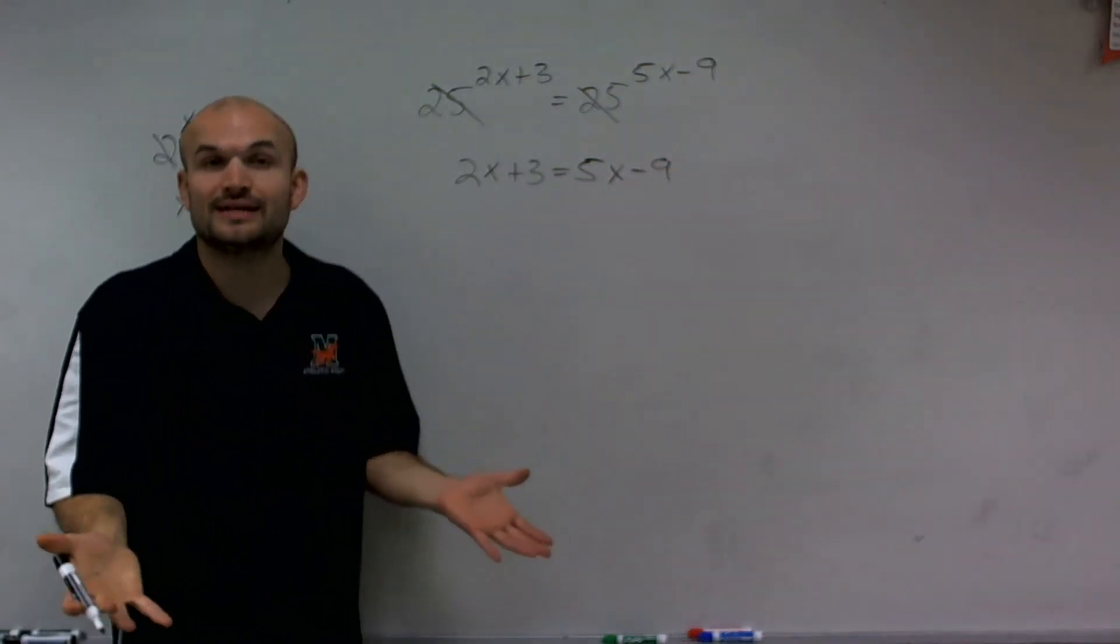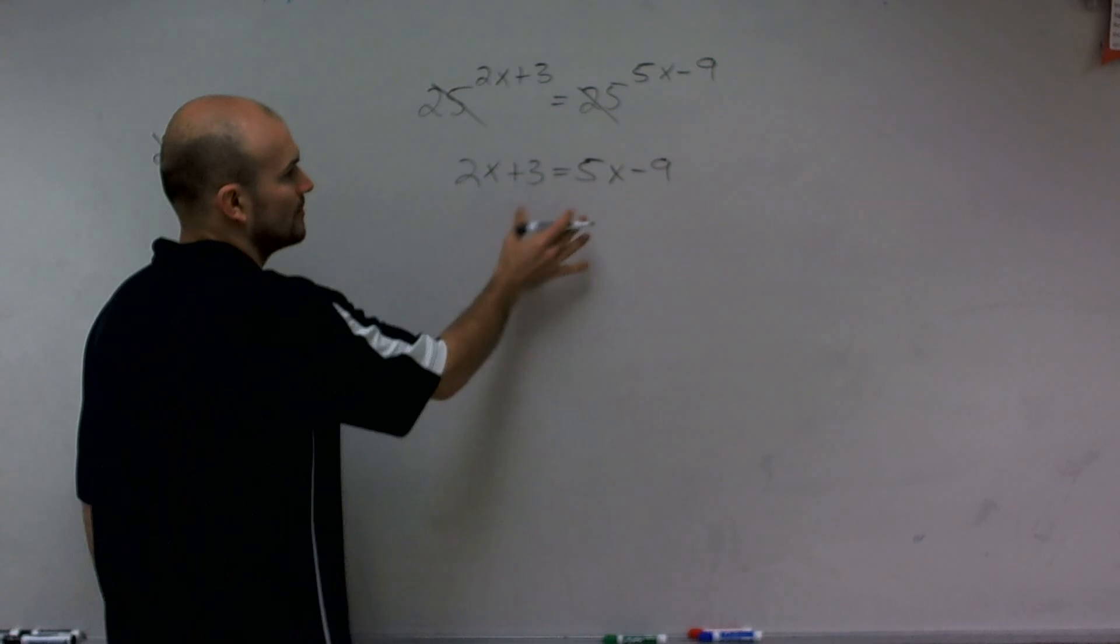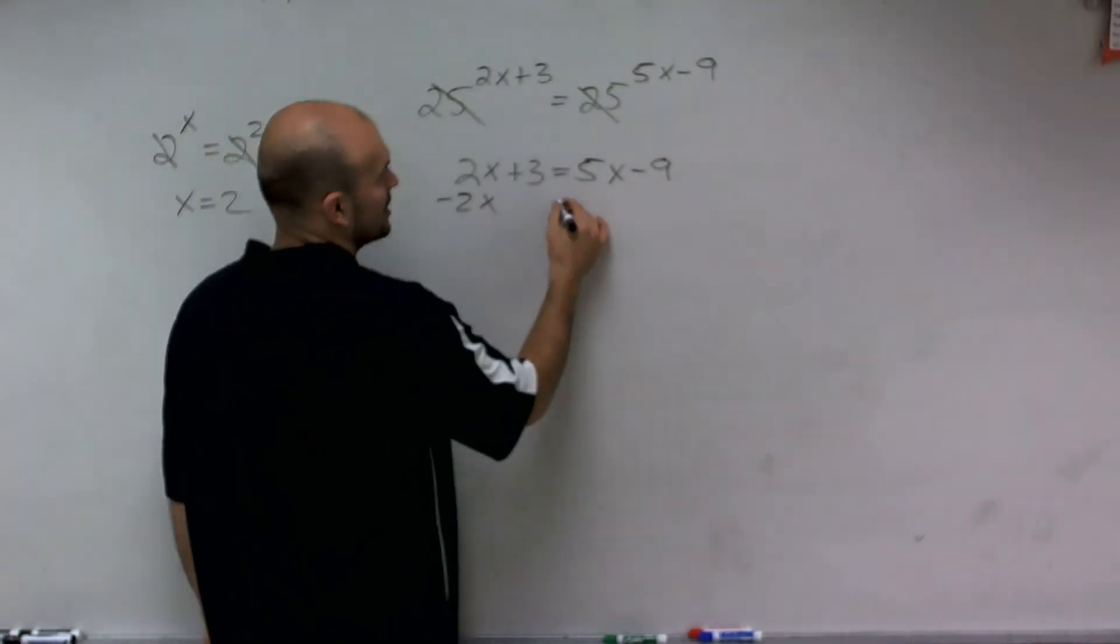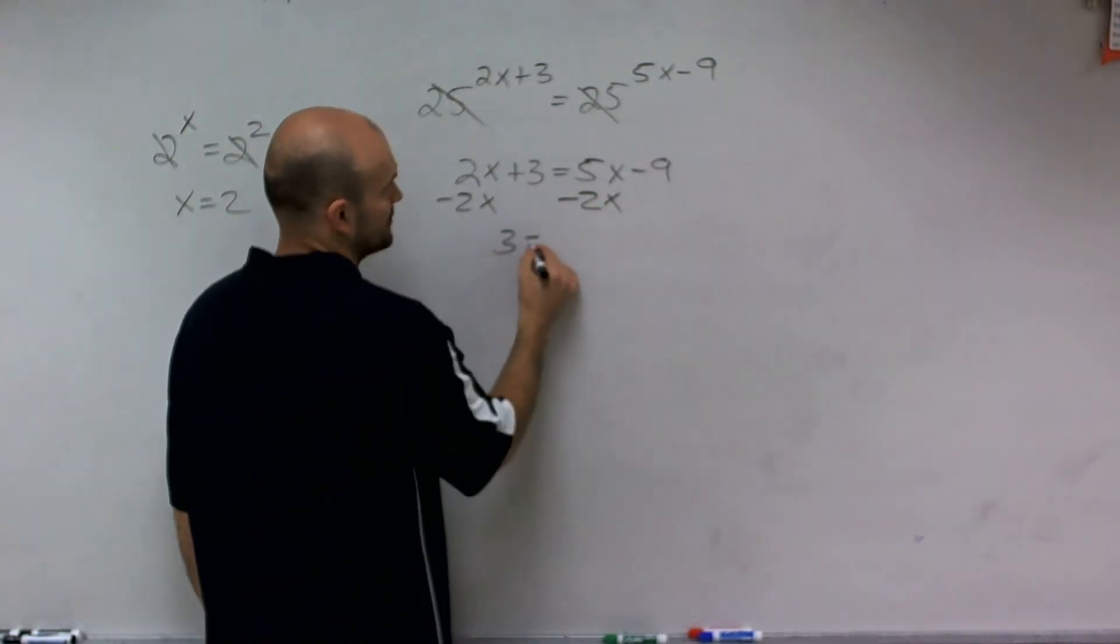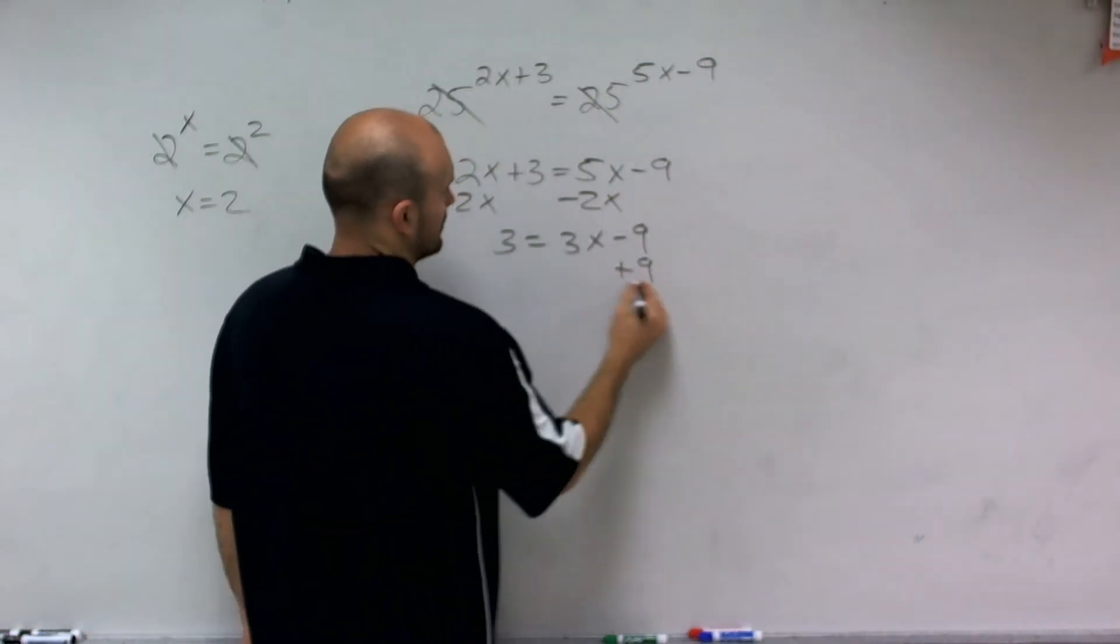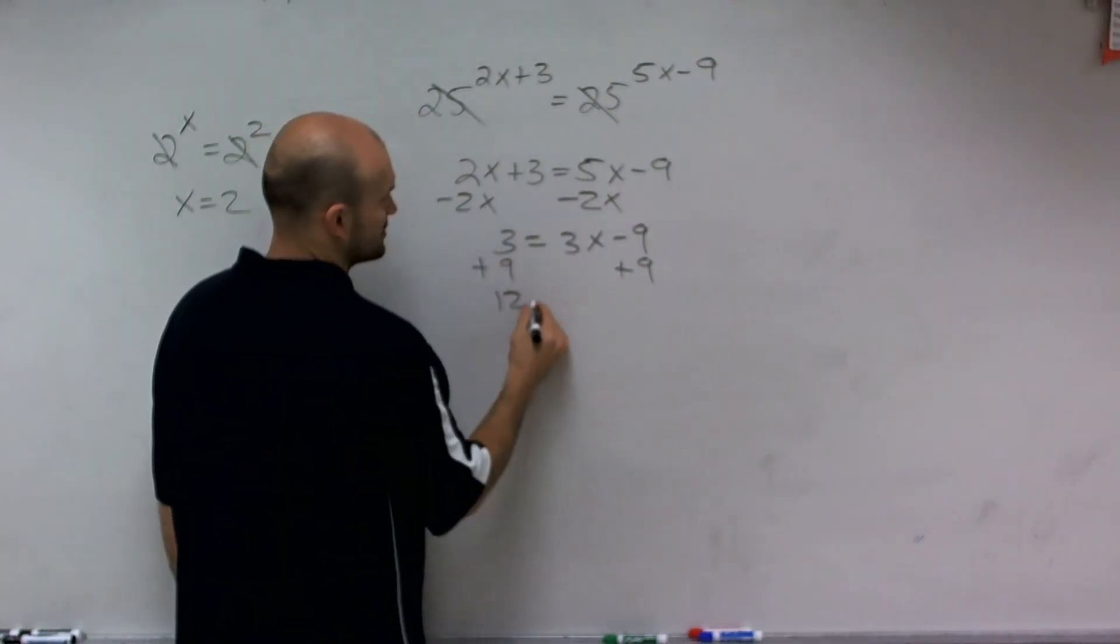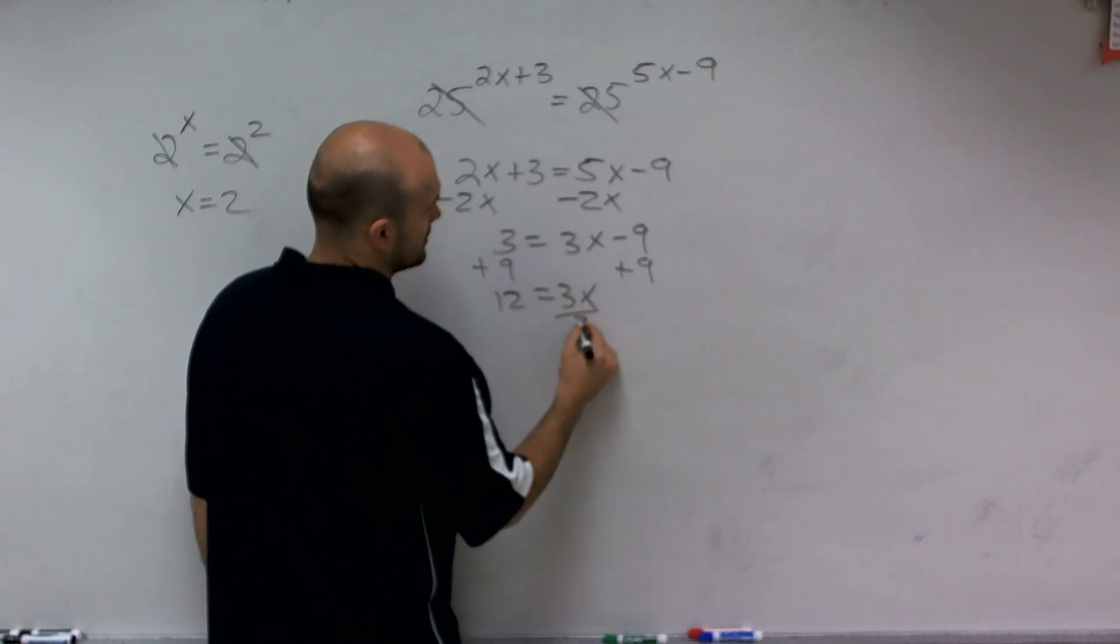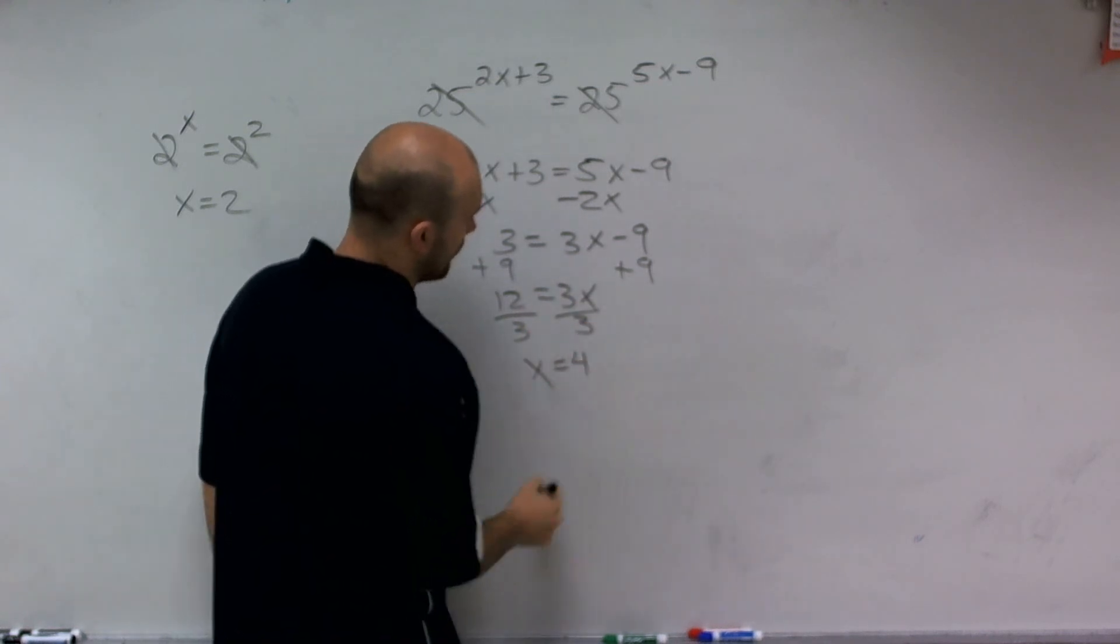Now we're just into a problem where we need to solve for x. So now we're just going to use our inverse operations, get our x's over to the same side. So we have 3 equals 3x-9. Add 9 to the other side, and I get 12 equals 3x. Divide by 3, and I get x equals 4.